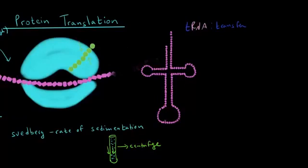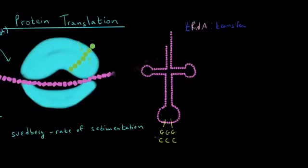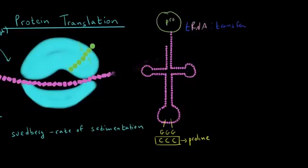Let's focus on one particular place on the tRNA molecule. Between the two yellow lines, there are three nucleotides. Let's say those three nucleotides are G, G, G. The codon that's complementary to G, G, G is C, C, C. And the codon C, C, C happens to code for the amino acid proline. So this particular tRNA molecule is going to carry the amino acid proline. The bond between the amino acid and the tRNA molecule is a very high-energy bond — it's relatively unstable — and we'll talk about that more later.